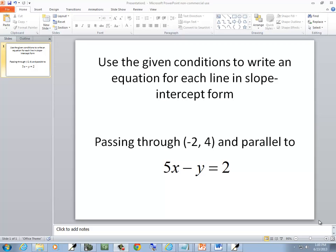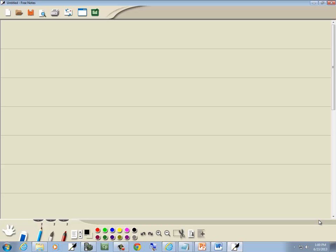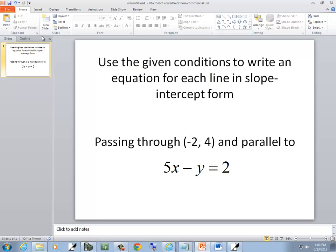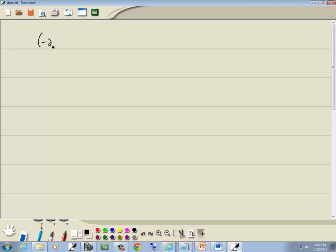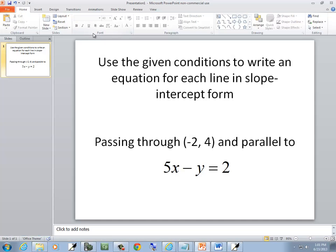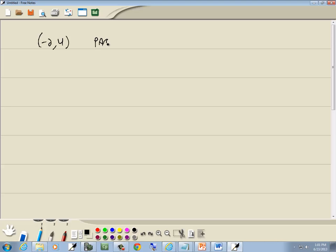In this problem, we want to use a given condition to write an equation for each line in slope-intercept form. And we've got negative 2, 4 is the point it goes through. And it's parallel to 5x minus y is equal to 2.